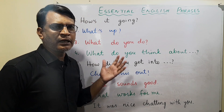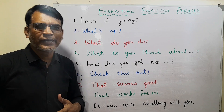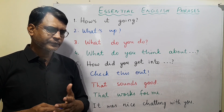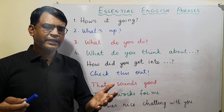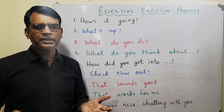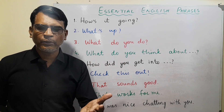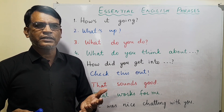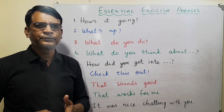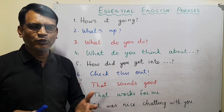Here we are with them. The very first is 'How is it going?' It's another way of saying 'How are you?' So rather than saying 'How are you?' you can ask somebody 'How is it going?' and the other person might say 'Everything is okay,' 'I'm fine,' or 'I'm at the top of the world' — that could be the answer.